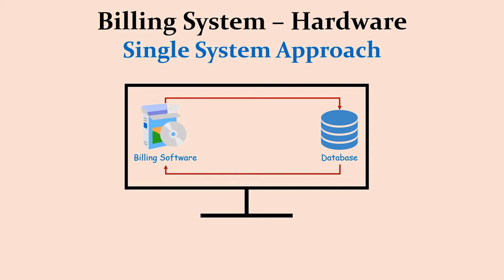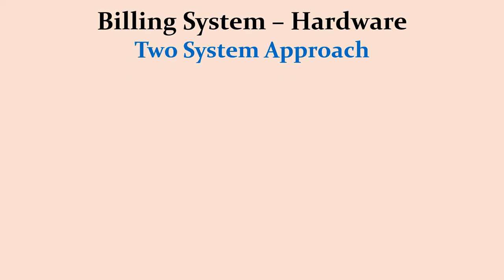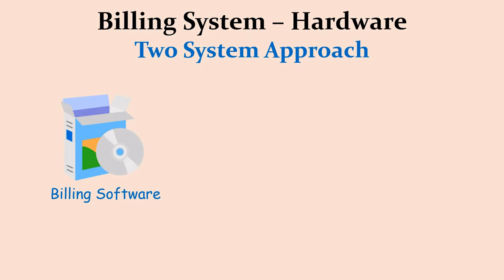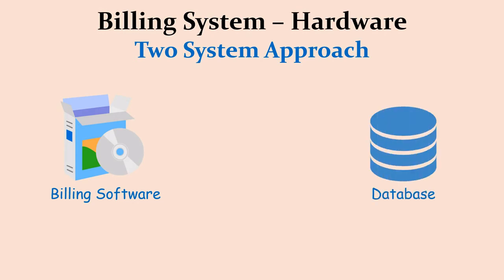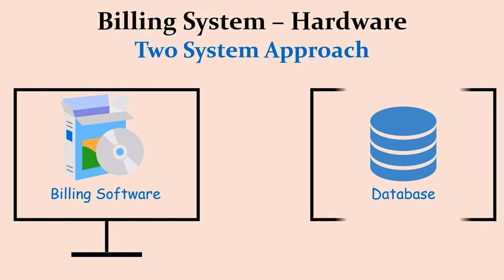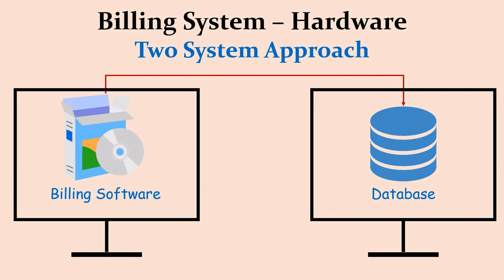A small variation to the single system approach is the two system approach. The billing application is installed on one computer, and the database is installed on another computer. The computer where the database is installed can be called a database server, because that is its dedicated mission. The operator sits in front of the first computer with the billing application and does the work — there is no need to sit in front of the database server for normal billing tasks. If budget allows, this solution is advisable.